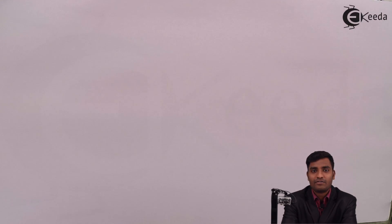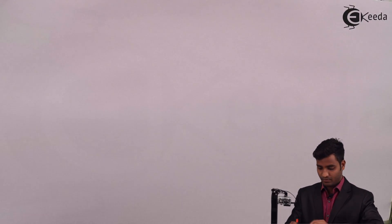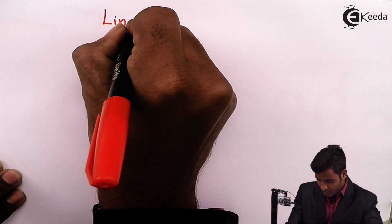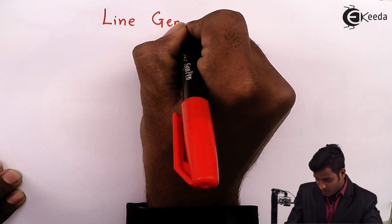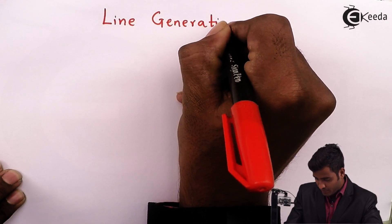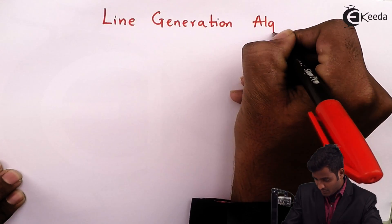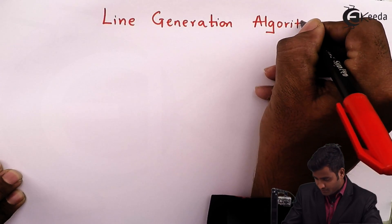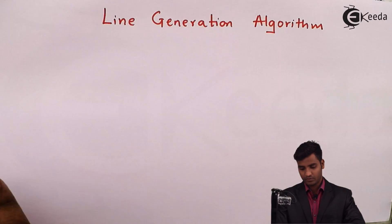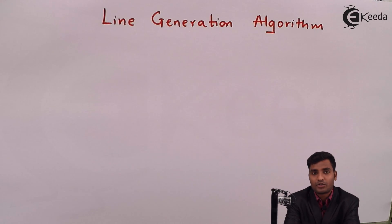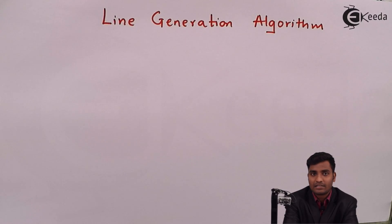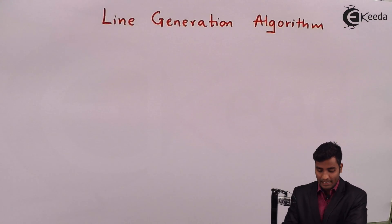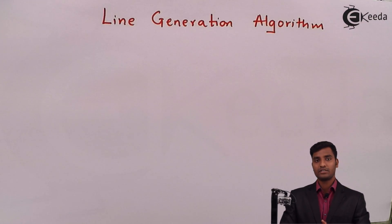Hello friends. In this video we will study line generation algorithm. The process of turning on the pixel for a line is called line generation, which means that we will turn on the pixel for a line. That type of algorithm is called a line generation algorithm.